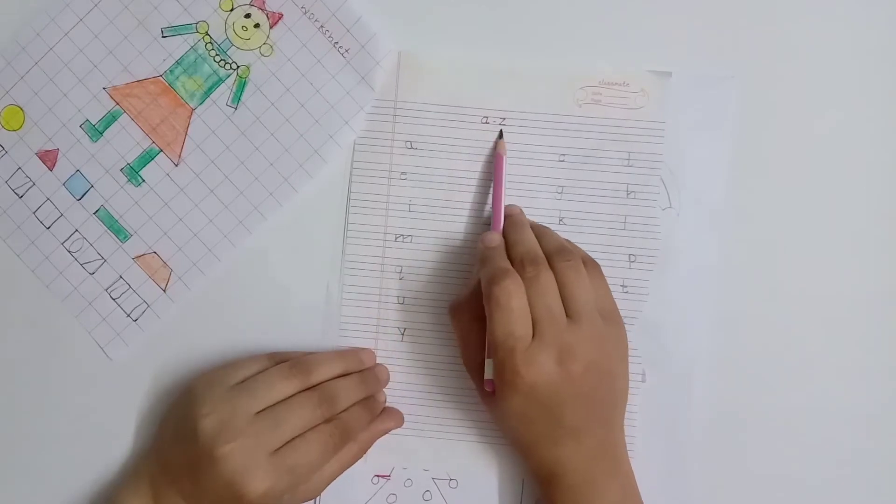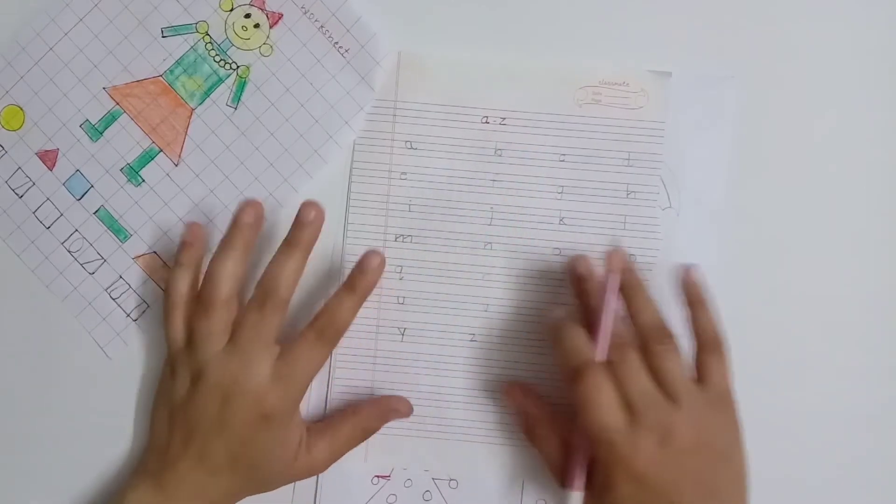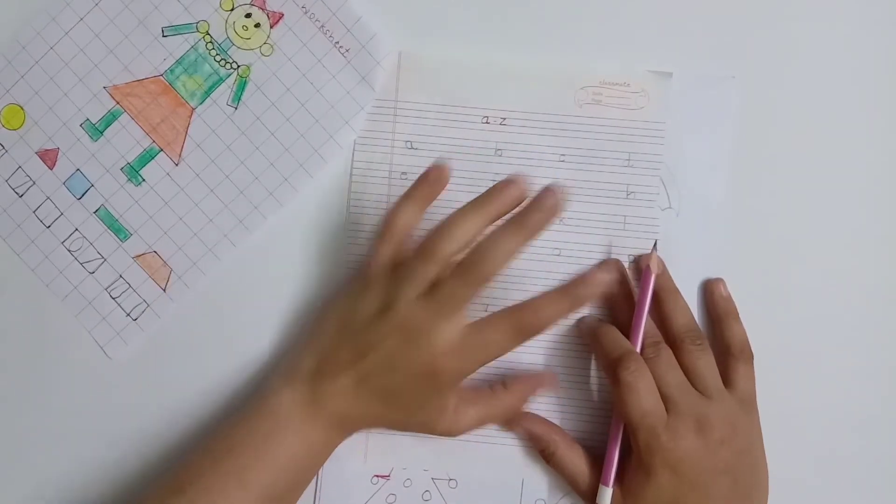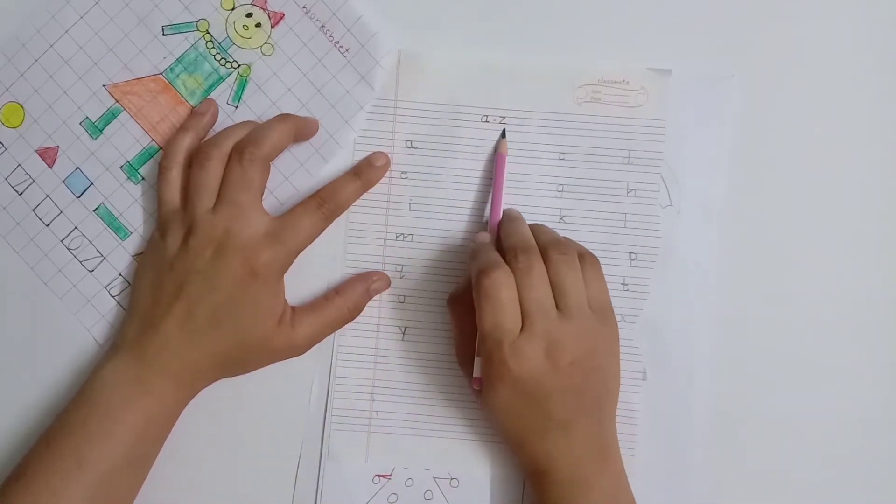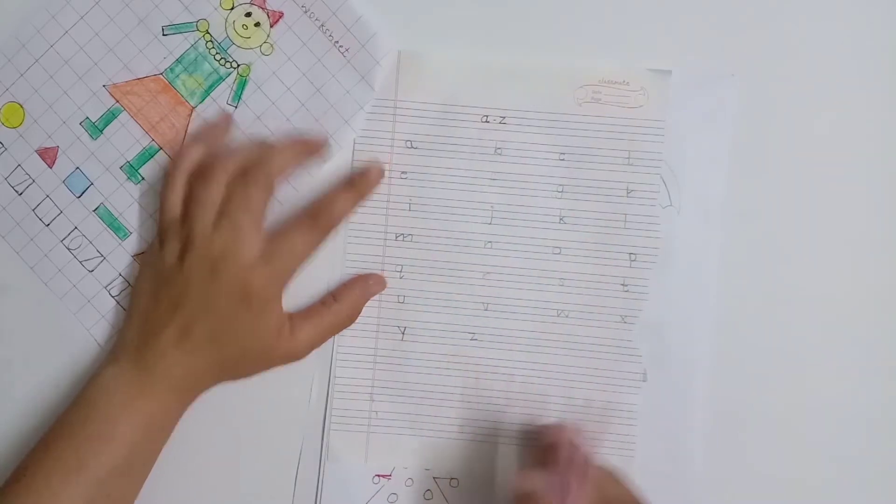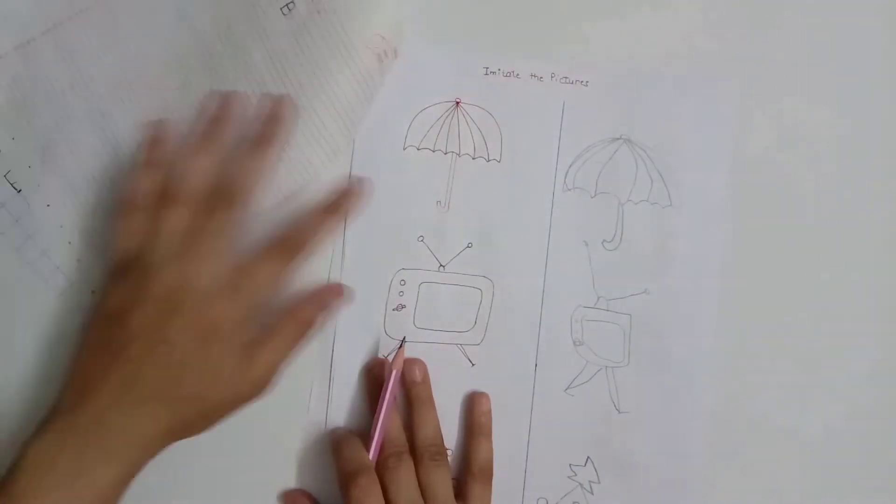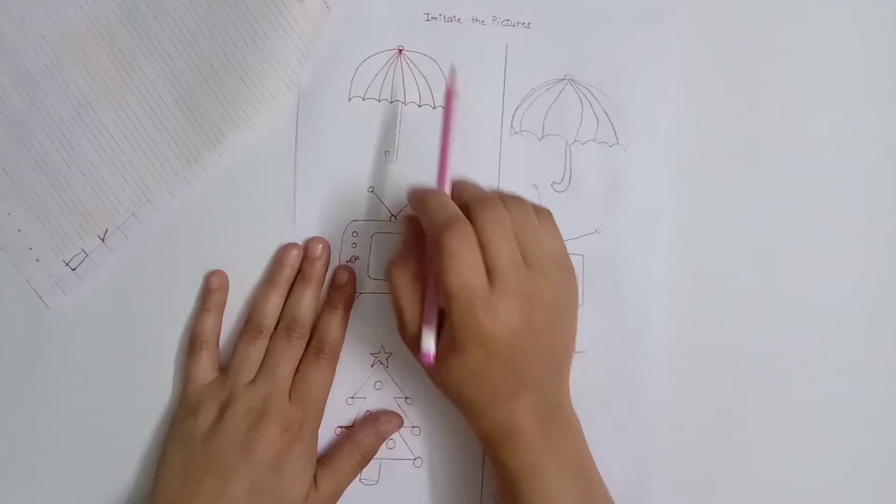After this, our next worksheet is A to Z in small letters. On Monday, I had him write in capitals, so today I have just given him to write A to Z in small letters, which he did nicely. After that, our next worksheet is imitate the pictures.